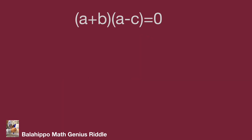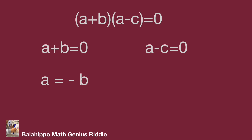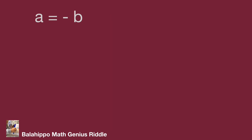So a plus b equal to 0 or a minus c equal to 0, meaning a equal to minus b or a equal to c. While a equal to minus b, substituting into a plus b minus c equal to 800, the value of c equals minus 800.